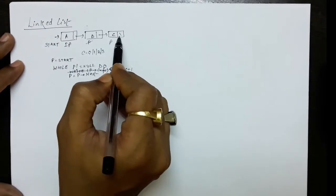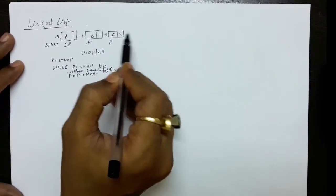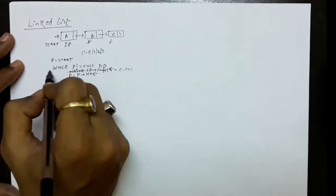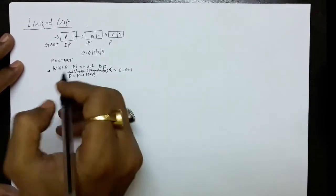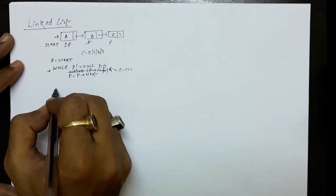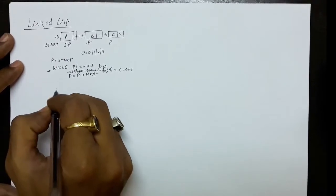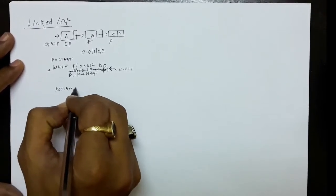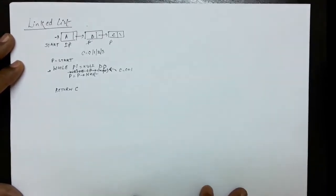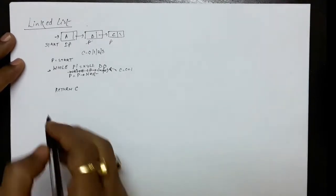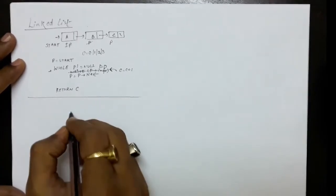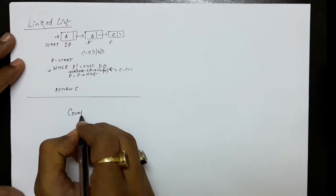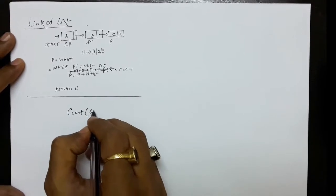If you do P equals to P dot next and the next field of this node is null, P becomes null and the loop condition fails. You come out of the loop and finally return C, indicating that C is the number of nodes in the linked list. So you can write it afresh — you had to count the number of nodes.